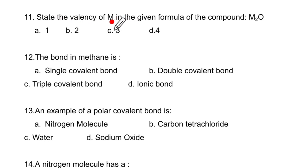State the valency of M in the given formula of the compound M2O. This two has come from here 2 minus. Oxygen has 2 minus valency, so M will have 1 plus. So this will be the correct option. The bond in methane. Methane has four single covalent bonds, so this is the correct option.